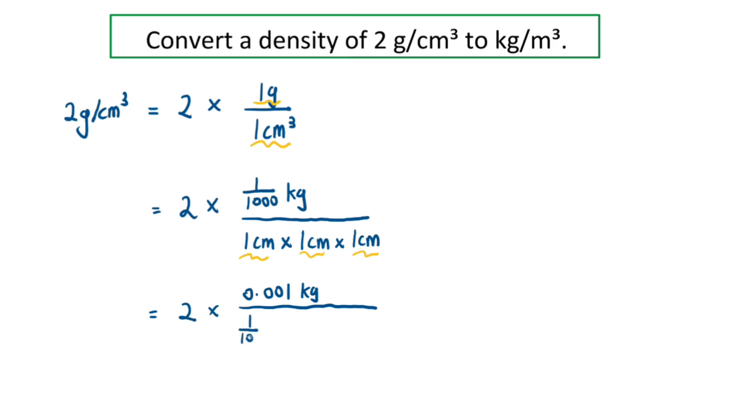So we have 1/100 m × 1/100 m × 1/100 m. So now as you can see, we have kg and meter, or rather three meters in the denominator for the units. So now we have the required units.